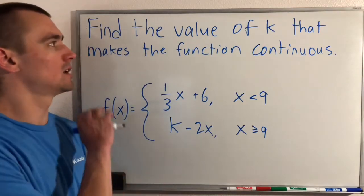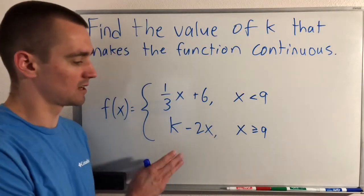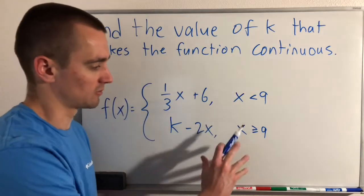We're trying to find the value of k that makes this function continuous, where k is a constant and we're given that f of x is this piecewise function here.